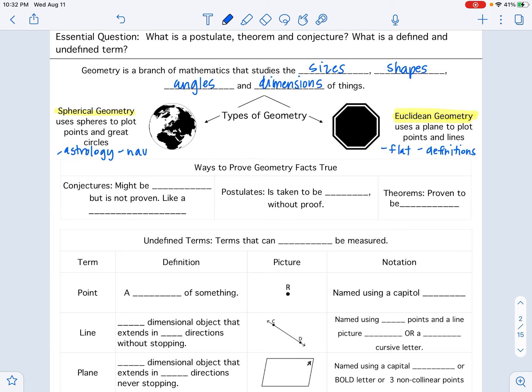These definitions that we're basing it off of are the ways we can prove geometry facts are true. So conjectures, postulates, and theorems. They all kind of mean relatively the same thing about how to prove things. But each of them are a little bit different in how you can prove that it is true. So conjectures might be true, but they have not been proven yet. So that's your job is to try and prove it. It's kind of like a hypothesis in science.